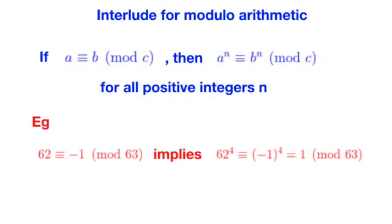The final thing we need to know is that, given a congruence equation, we can freely raise both sides of a congruence to any positive power we like. You can see another example here where we show that 62 power 4 is congruent to 1 modulo 63.